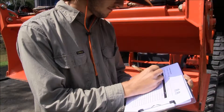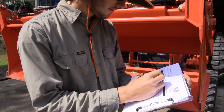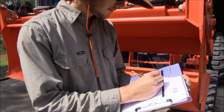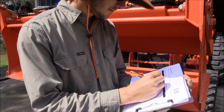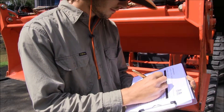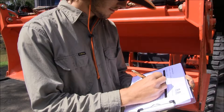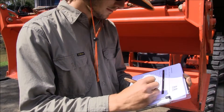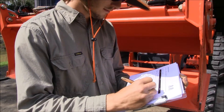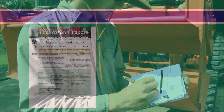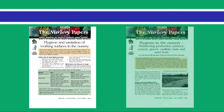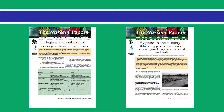The information that needs to be included in treatment records is the business name and address, the treatment date, the surface or material treated, the treatment type used, and the name of staff undertaking the treatment. A range of publications and resources on nursery hygiene and sanitation are available on the NGIA website.